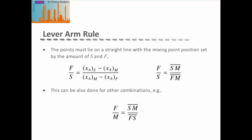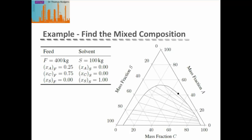For example, the feed to the total fraction can be given by the length of the line between the solvent and the mixing point divided by the feed-to-solvent length. In this example, we're given the amount of feed and the composition of the feed, plus the amount of solvent and the composition of the solvent. What we want to do is calculate the position of the mixing point using the lever arm rule. The first thing we can do is use our data about the composition of the feed to plot our feed point on this ternary diagram. Then we can use the information about the solvent composition to plot our solvent point on this ternary diagram.